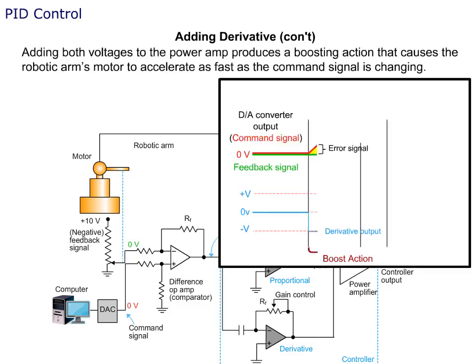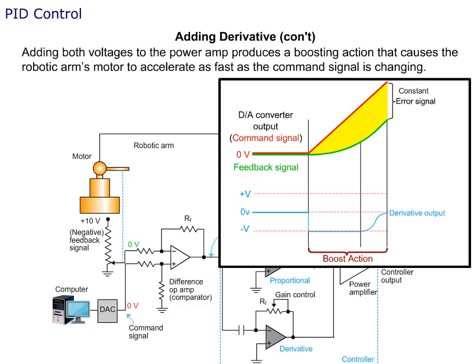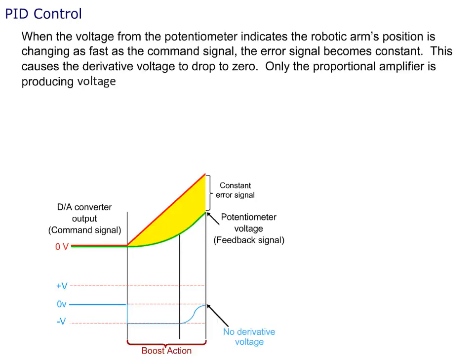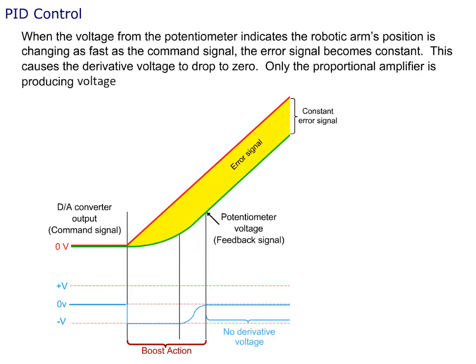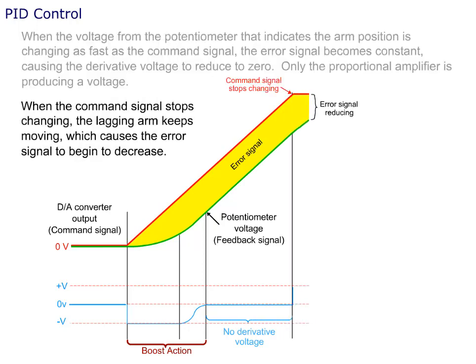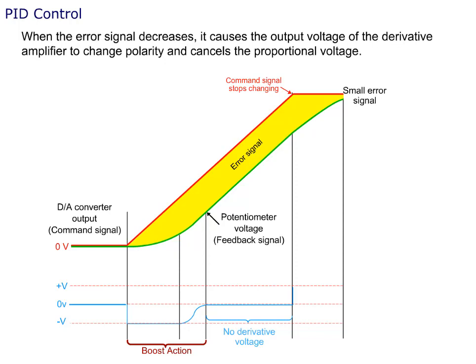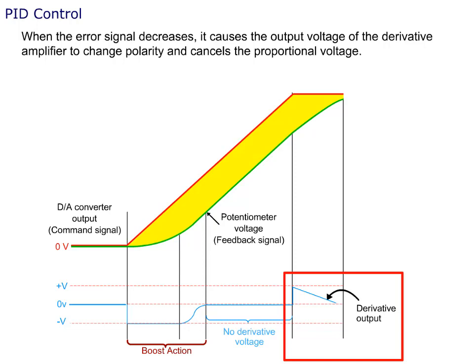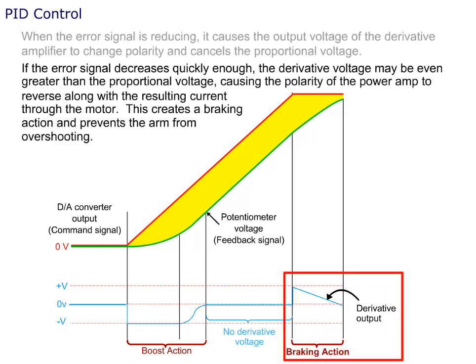Adding both voltages to the power amp produces a boosting action that causes the robotic arm's motor to accelerate as fast as the command signal is changing. When the voltage from the potentiometer indicates the robotic arm's position is changing as fast as the command signal, the error signal becomes constant, causing the derivative voltage to drop to zero. Only the proportional amplifier is producing voltage. When the command signal stops changing, the lagging arm keeps moving, which causes the error signal to begin to decrease. When the error signal decreases, the output voltage of the derivative amplifier changes polarity and cancels the proportional voltage. If the error signal decreases quickly enough, the derivative voltage may even be greater than the proportional voltage, causing the polarity of the power amp to reverse — creating a braking action that prevents the arm from overshooting.